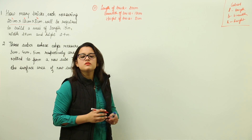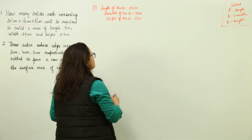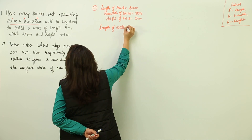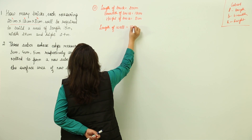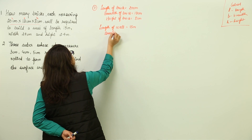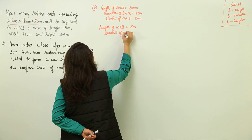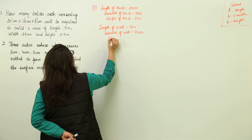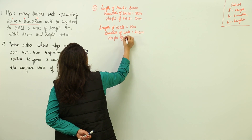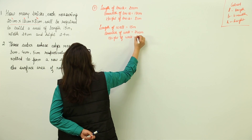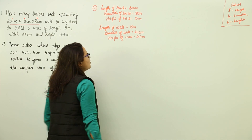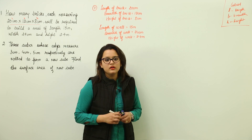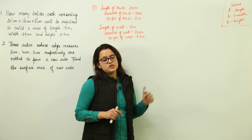The other measurements given are for the wall. Length of wall = 15 meters, breadth of wall = 24 centimeters, and height of wall = 2.4 meters. Now what are we supposed to find out? We are supposed to find the number of bricks required to build a wall of these measurements.